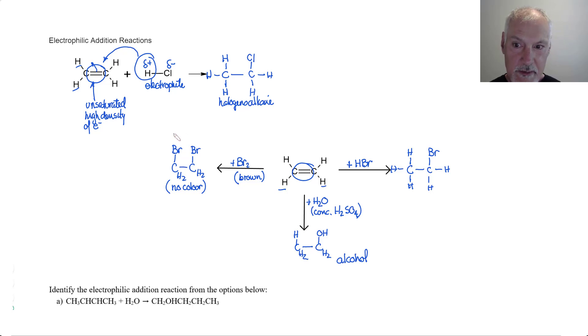This, by the way, is what we call a dihalogeno alkane. So these are three possible substances I could add to any unsaturated hydrocarbon. And they would produce classes of compounds from alcohols to dihalogeno alkanes. And my example over here, the halogeno alkane.